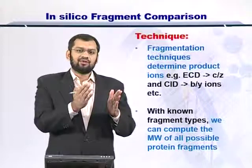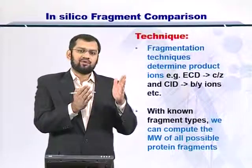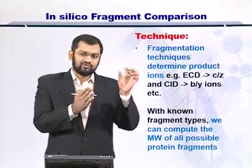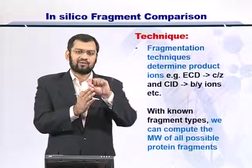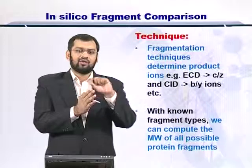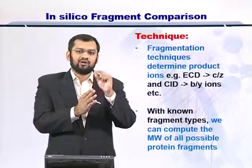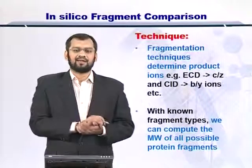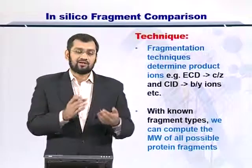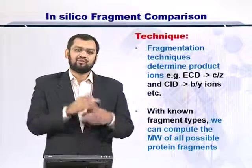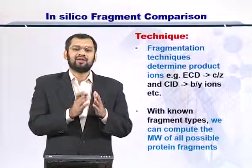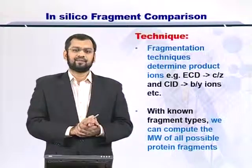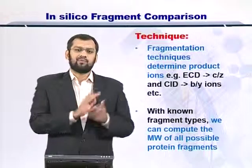Given that in your experiment you know which technique was employed to fragment the protein for MS2, you use the same technique to fragment the protein in the database. Therefore, you will end up with ions depending upon the fragmentation technique. For example, if the fragmentation technique is ECD, then you know that you will end up with C and Z ions for each protein in the protein database. The next step is to compare these fragments.